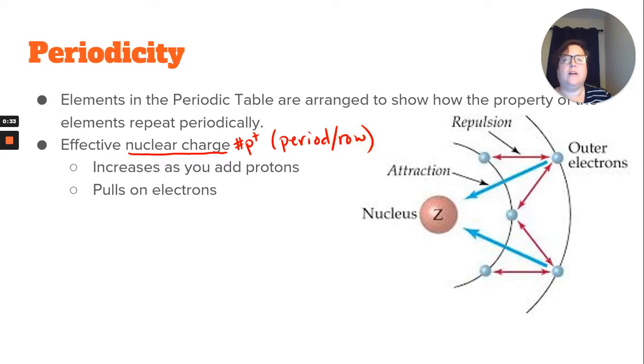So you're moving across. They have the same number of energy levels. As you add more protons, they're attracting those electrons better, or they're attracting them more. That attraction is greater. So in our picture here, that's what this blue arrow is representing. That's the effective nuclear charge, that ability to pull those electrons in.